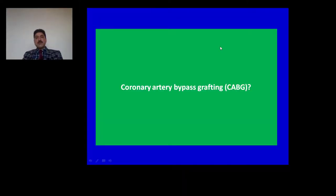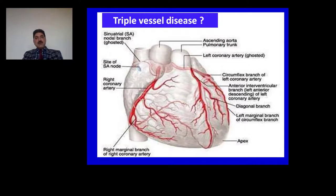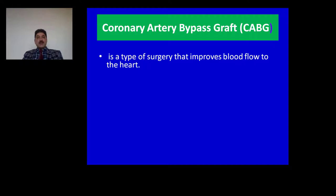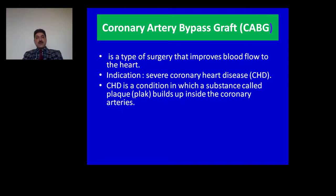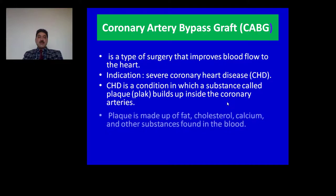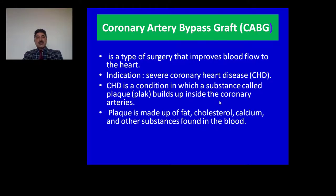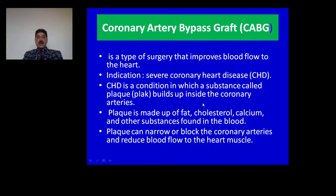What is coronary artery bypass grafting and triple vessel disease? Triple vessel disease is a condition in which the right coronary artery, left anterior descending coronary artery, and left circumflex artery are all involved by coronary artery disease. Coronary artery bypass is a type of surgery that improves blood flow to the heart. The indication is severe coronary artery disease — a condition in which plaque builds up inside the coronary arteries. Plaque is made up of fat, cholesterol, calcium, and other substances found in blood.